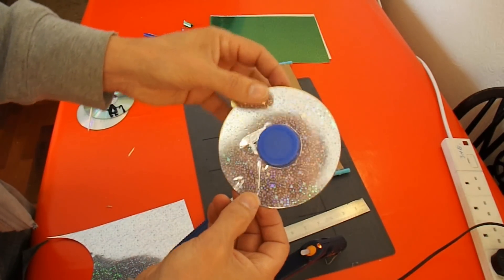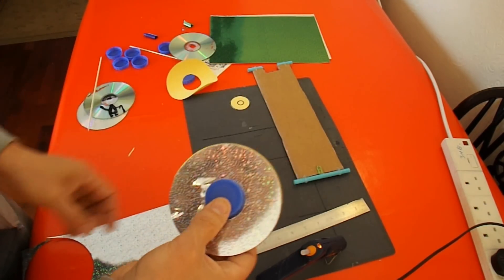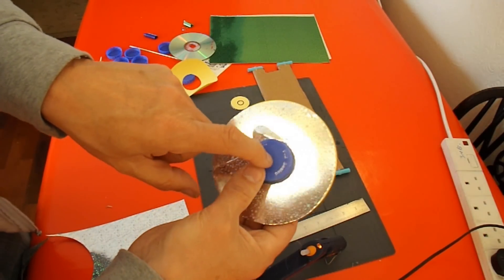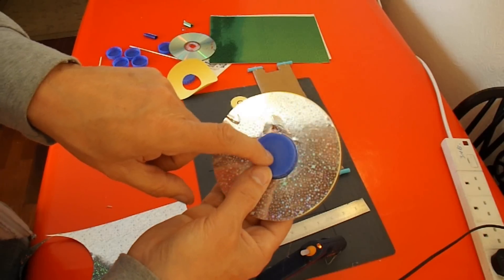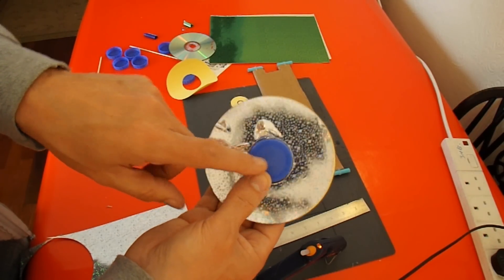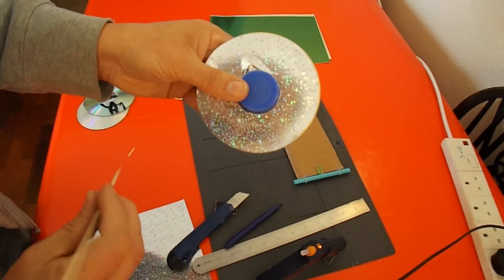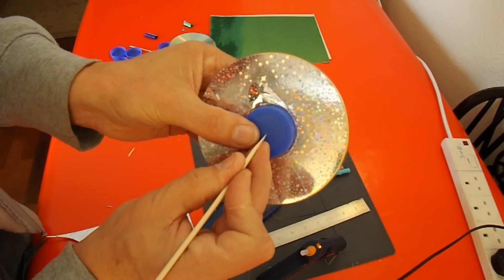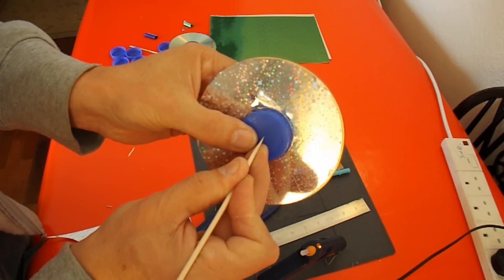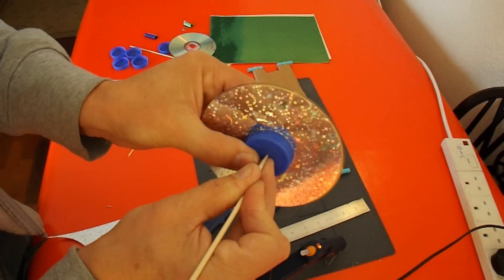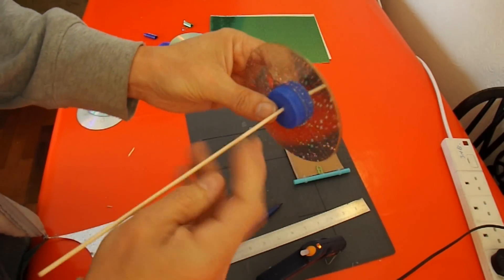So there we go. You might need to use a nail or a sharp metal object to push the hole through. Or if they're quite soft bottle tops like these are, you might be able to just push straight through.